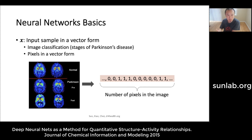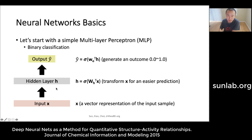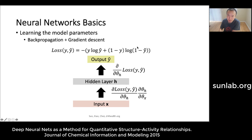The winning team used deep learning, so the paper provides a quick overview of neural network basics. The inputs to the network are some kind of feature representation — it could be pixels, binary, or numerical values. The network goes through many layers of neurons; each layer transforms the input X through a linear combination followed by a non-linear activation, ultimately predicting an output. This simple neural network with one hidden layer is called a multi-layer perceptron, or MLP.